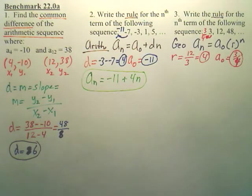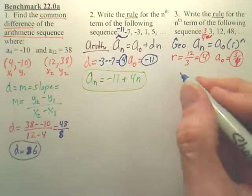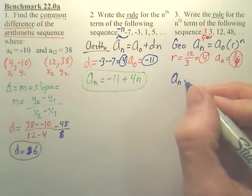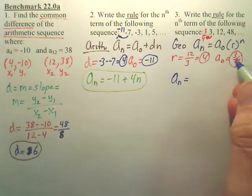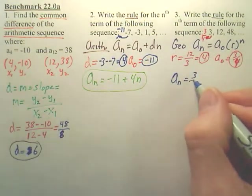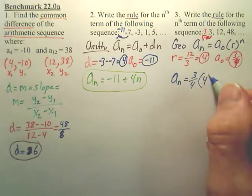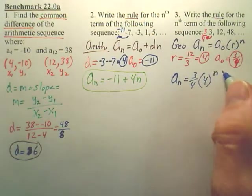And from there, we simply make our rule, which would be A0, which is 3 fourths, and then R is 4 to the nth power.